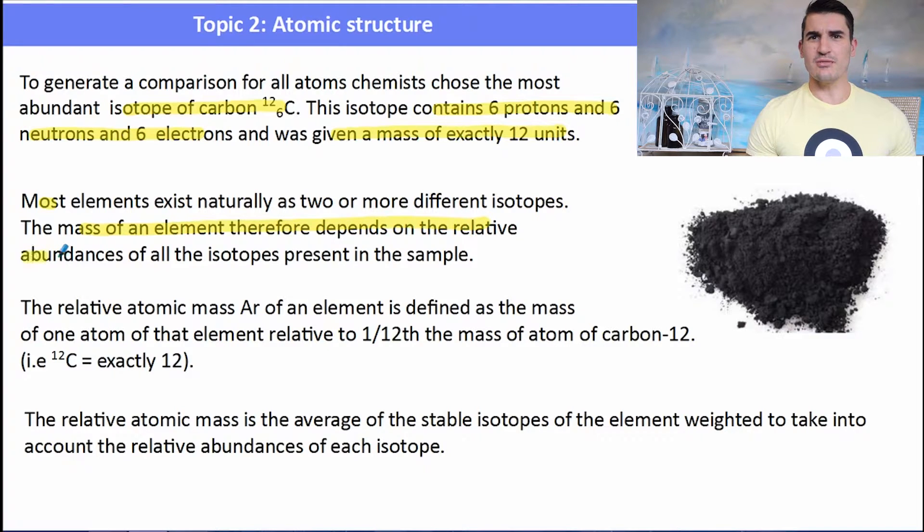So most elements usually occur as two or more different isotopes, and then the mass of the elements therefore depend upon the abundances of all of the samples. It's a weighted average. So whatever one has more, it's probably going to be weighted more towards that one. So the chlorine one is 35.5, because there's a larger abundance of chlorine-35.